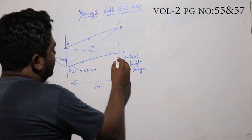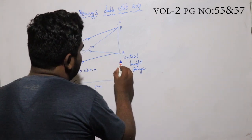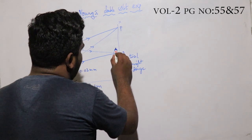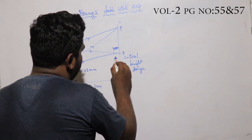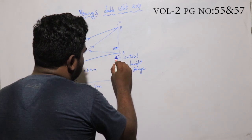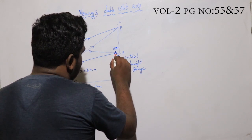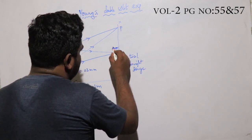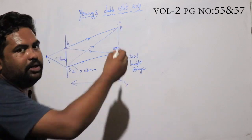On the screen, we have a bright fringe at the center. On either side, you have dark fringes. So the pattern is: bright, dark, bright, dark, bright, dark - alternating bands.